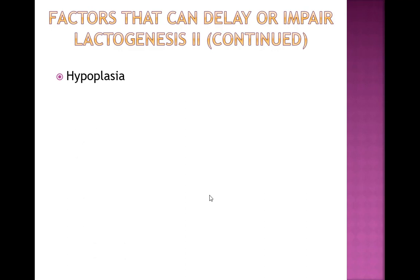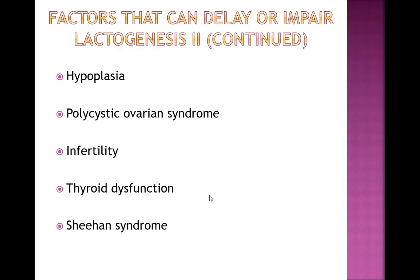Additional factors include hypoplasia (underdeveloped breast tissue), polycystic ovarian syndrome, infertility, thyroid dysfunction, Sheehan syndrome — where the mother's blood pressure drops substantially right after birth, blood does not reach the pituitary gland, and permanent damage results, impairing the release of hormones critical for lactation — and retained placental fragments. If even a tiny bit of placental fragment remains in the uterus, the body thinks the mom is still pregnant and will not start producing mature milk.